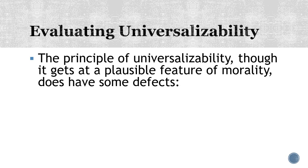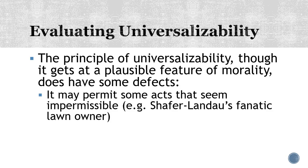In further thinking about Kant's moral theory, we want to think about his first test — the principle of universalizability. While it gives some really plausible results, for example explaining why stealing and lying are immoral because they can't be made universal, it does have some defects and strangeness. It may permit some acts that seem impermissible. Schaeffer-Landau's fanatic law and owner example is one where the principle of universalizability appears to permit something that just from the outside seems like it shouldn't be permissible, suggesting something may be wrong with the theory.